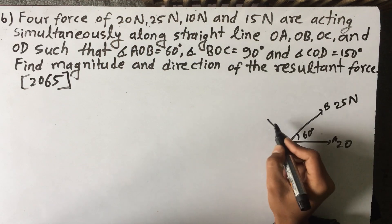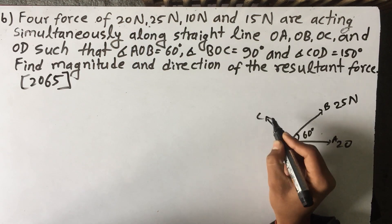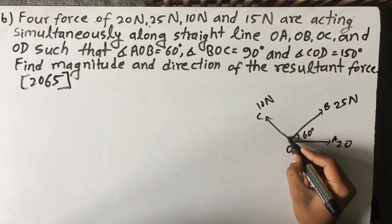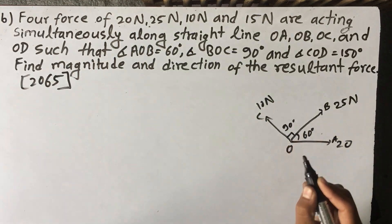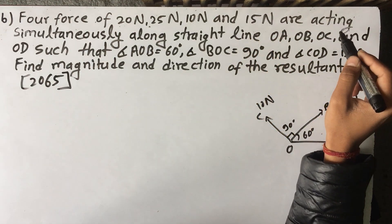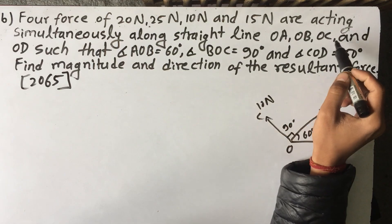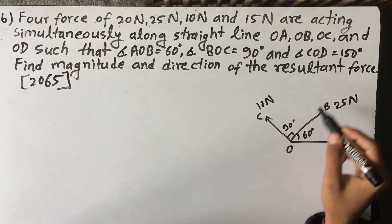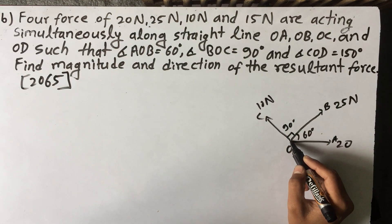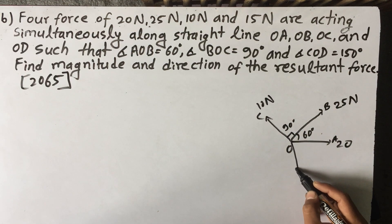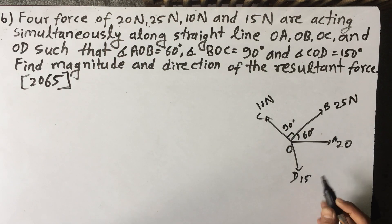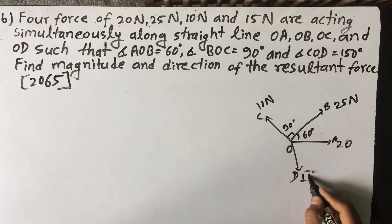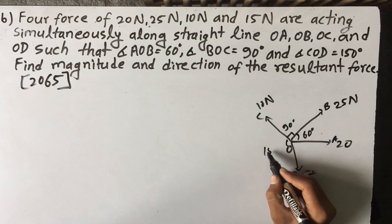So C minus 90 degrees. This is 10 Newton and this angle of 90 degrees. And this force OD is 15 Newton. The angle of OD is 150 degrees.